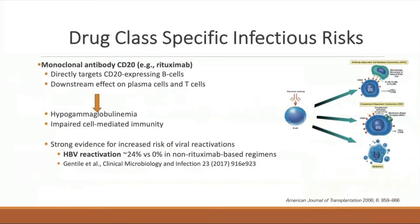Another drug class to note: monoclonal anti-CD20 antibodies such as rituximab. Patients treated with this class of medications are at high risk for viral reactivations — specifically, you must screen for hepatitis B reactivation. Any patient receiving rituximab must be screened for hepatitis B and C. If there is a positive history or positive serologies, patients generally require prophylaxis against hepatitis B.